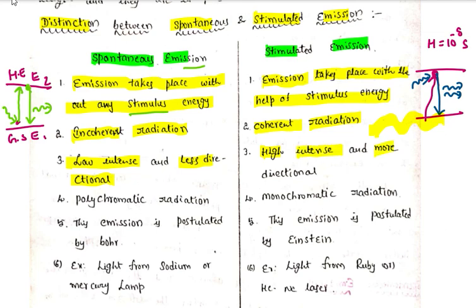Stimulated emission is high-intensity and more directional. Spontaneous emission produces polychromatic radiation — 'poly' meaning many, like white light. Stimulated emission produces monochromatic radiation. Spontaneous emission was postulated by Bohr; stimulated emission was postulated by Einstein.